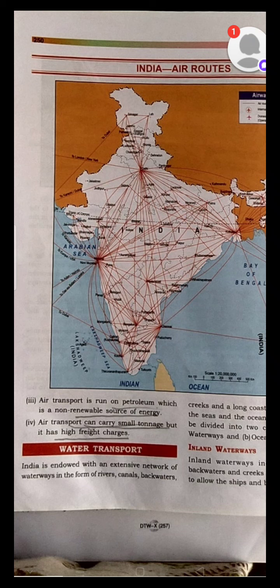In our last session we had studied about railways — the first railway when it was introduced and by whom. It was introduced by the Britishers in the year 1853 between Mumbai and Thane.